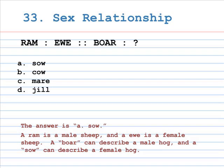Number 33 and 34: sex relationship. Ram is to ewe as boar is to A. Sow, B. Cow, C. Mare, D. Jill. The answer is A, Sow. A ram is a male sheep, and a ewe is a female sheep. A boar can describe a male hog, and a sow can describe a female hog. The makers of the MAT like names for the sexes of animals, the offspring of animals, and groups of animals.